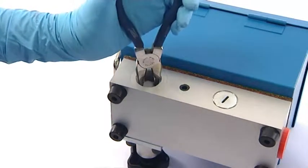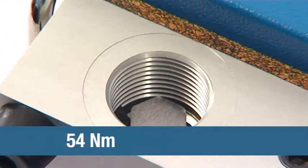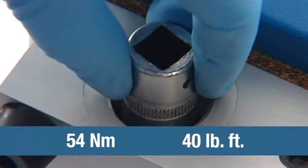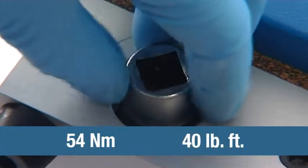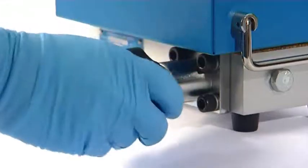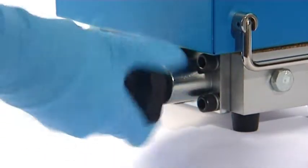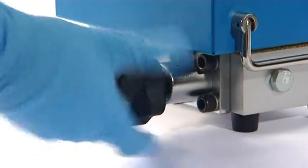Then screw in the disc holder and tighten to 54 newton meters or 40 pounds foot. Finally, unscrew the load valve fully and your tester is ready to use.